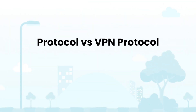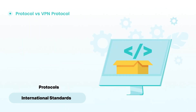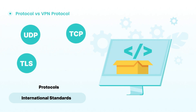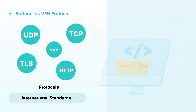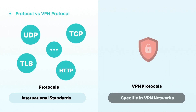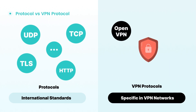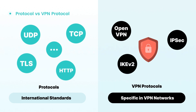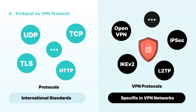What's the difference between protocols and VPN protocols? Protocols usually mean global network standards such as UDP, TCP, TLS, HTTP, etc. Whereas VPN protocols such as OpenVPN, IPSec, IKEv2, L2TP, etc. are specific protocols used in VPN networks.